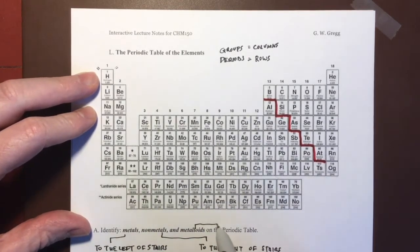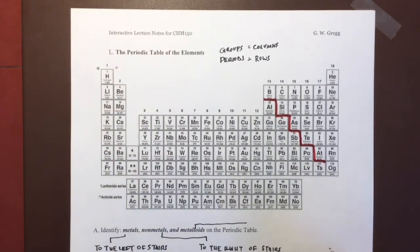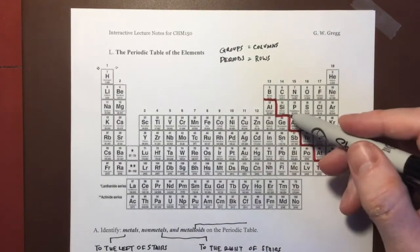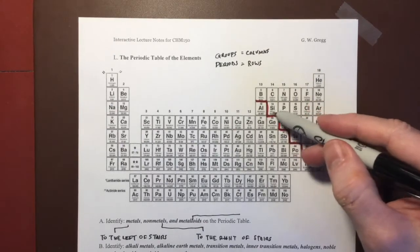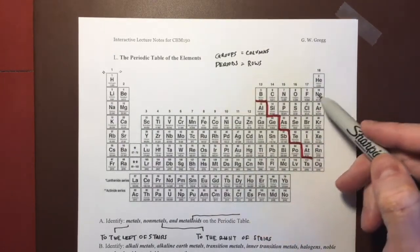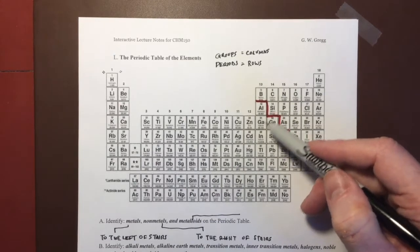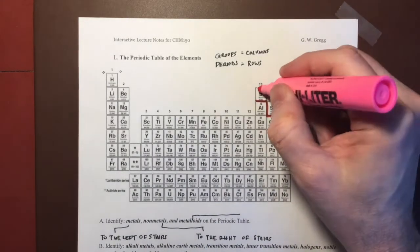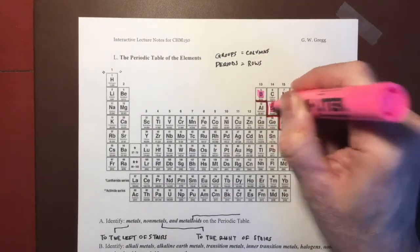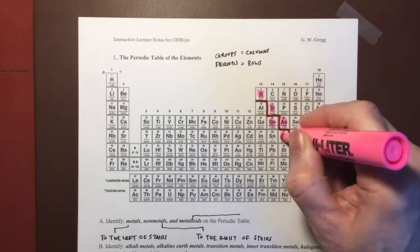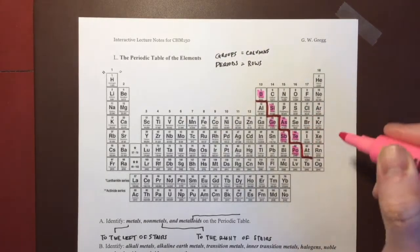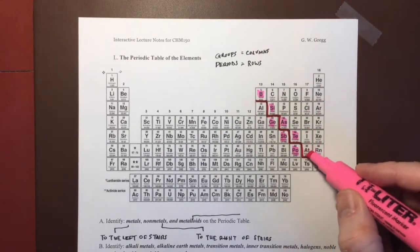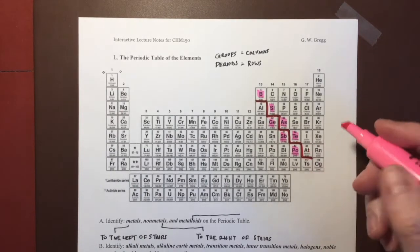There are elements that are right on this border between what we call the metals and the non-metals, and these elements share some properties of metals and some properties of the non-metals. So typically they include boron, silicon and germanium, arsenic and antimony, tellurium and polonium, and depending on the source they may include astatine. I'll go ahead and include it.